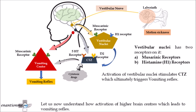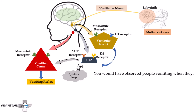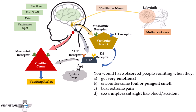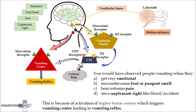Let us now understand how activation of higher brain centers leads to vomiting reflex. You would have observed people vomiting when they get very emotional, encounter some foul or pungent smell, experience extreme pain, or see an unpleasant sight like an accident. This is because activation of higher brain centers triggers the vomiting center, leading to the vomiting reflex.